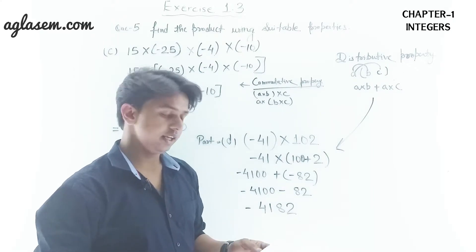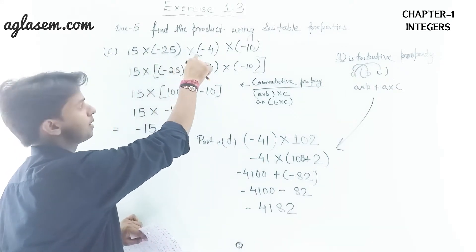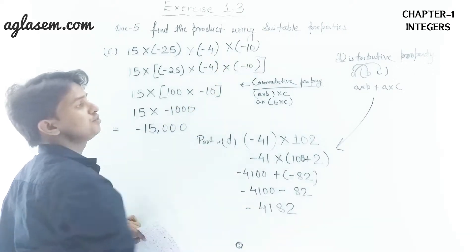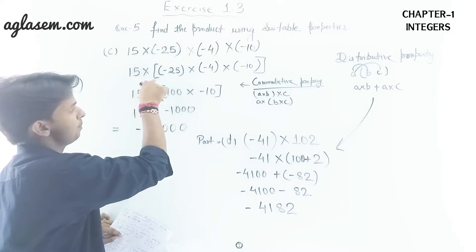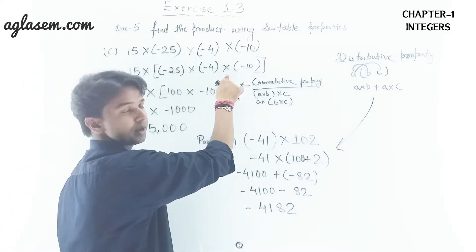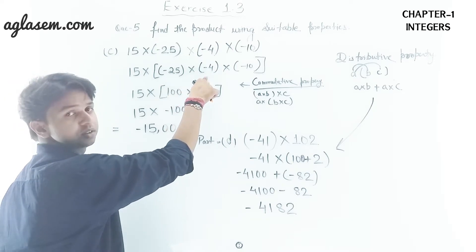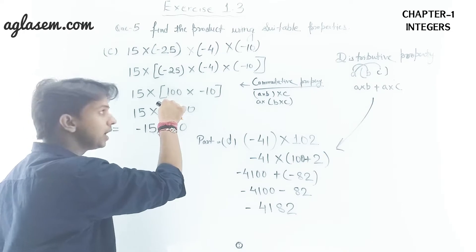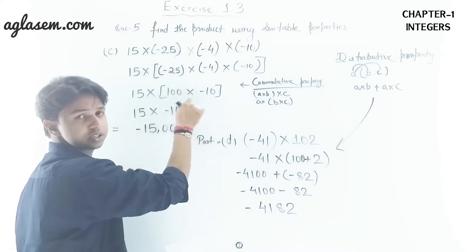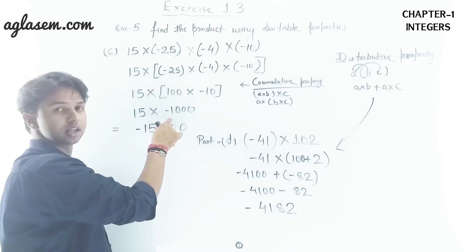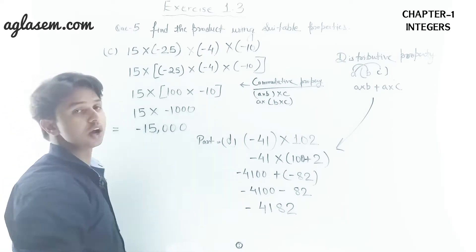Part c from Exercise 1.3: 15 × (−25) × (−4) × (−10). Using the associative property, we take 15 outside and solve the bracket: (−25) × (−4) = 100 (minus × minus = plus). Then 100 × (−10) = −1000. Finally, 15 × (−1000) = −15,000. This is the solution for Part c.